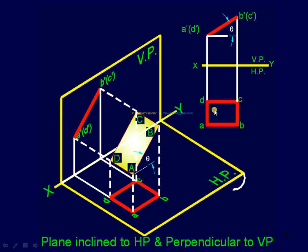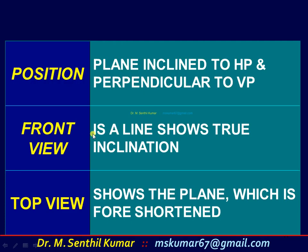Now we see the plane inclined to HP and perpendicular to VP. The plane ABCD is inclined to HP and perpendicular to VP. The front view is a line; the top view is a plane, but it won't show the true shape — it is a foreshortened, reduced one. You cannot solve this problem directly. First, assume the plane is parallel to HP, draw the top view and front view, then tilt the front view and get the final top view. Front view is a line showing the true angle; top view shows the plane which is foreshortened, not the true rectangle.